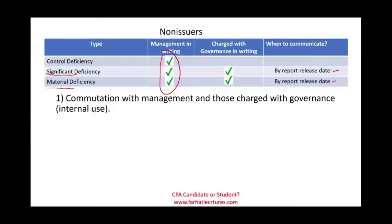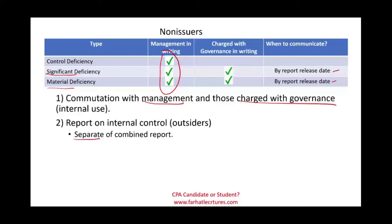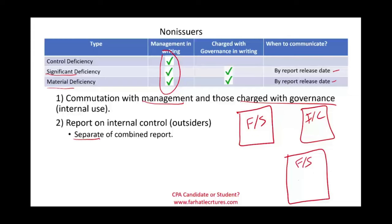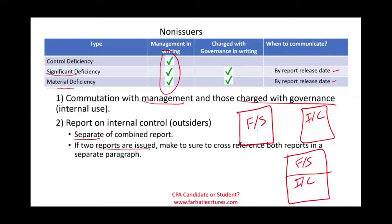We are dealing with two reports: we communicate internally to management and those charged with governance, which is the internal report, and we issue a report on internal control to outsiders. For the external report, we could have a separate report — one for the financial statement audit and one for the internal control — or a combined report containing both opinions. If we issue two reports, we cross-reference them. If it's one combined report, cross-referencing isn't needed.